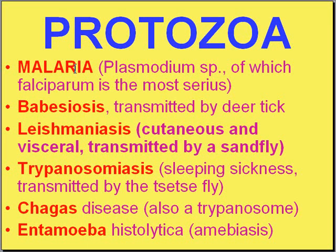The genus name is Plasmodium, and there are four main human species. Falciparum is always the most serious and the one most likely to be resistant. We'll get into that life cycle in the next picture, but I wanted to mention a couple of others quickly.